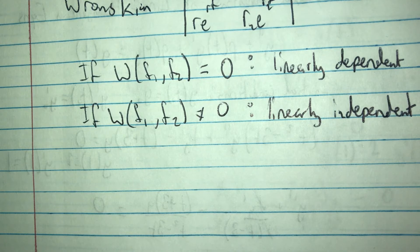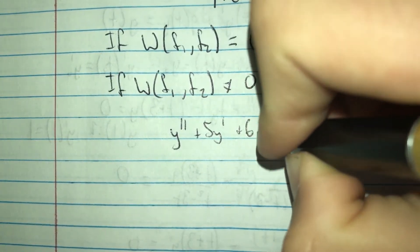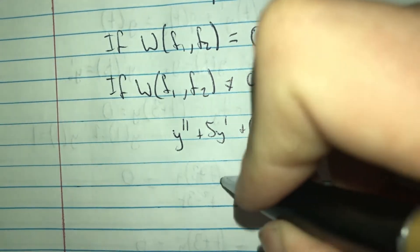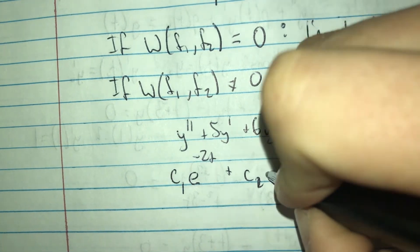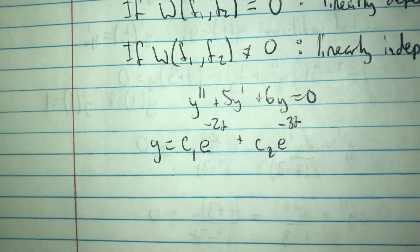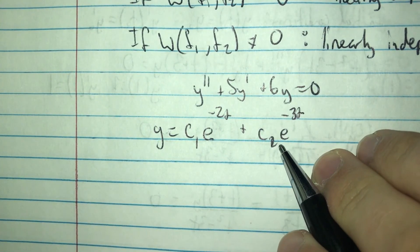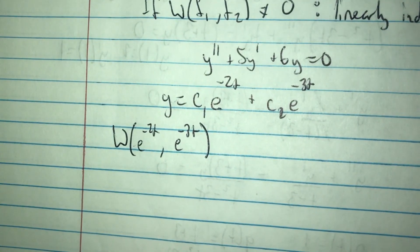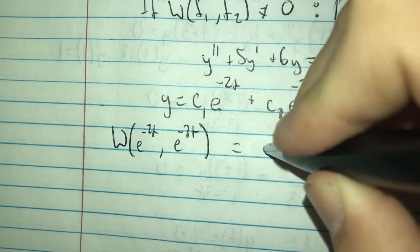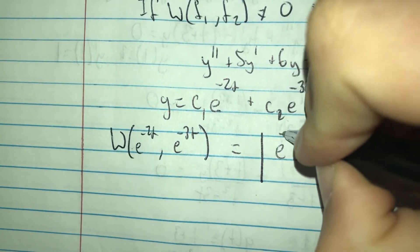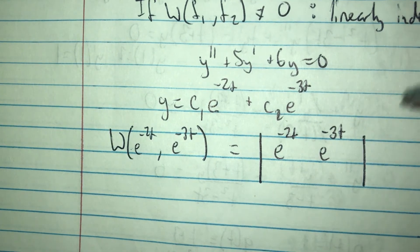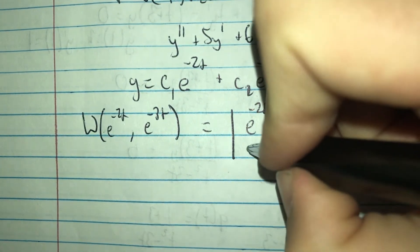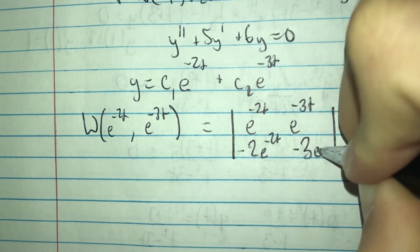From Section 3.1, we had y double prime plus 5y prime plus 6y equals 0, with solutions e to the negative 2t and e to the negative 3t. We want to find the Wronskian of e to the negative 2t and e to the negative 3t to determine if they are linearly dependent or independent. We place them in a matrix: the first row is e to the negative 2t and e to the negative 3t; the second row is their derivatives, negative 2e to the negative 2t and negative 3e to the negative 3t.